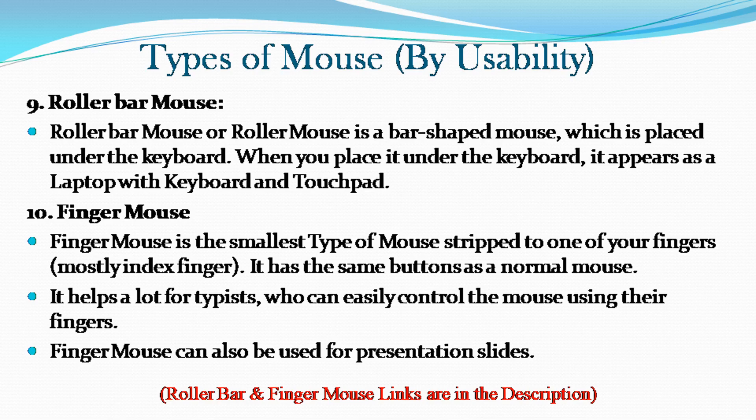Roller bar mouse, or roller mouse, is a bar-shaped mouse which is placed under the keyboard. When placed under the keyboard, it appears as a laptop with keyboard and touchpad. Finger mouse is the smallest type of mouse, strapped to one of your fingers. It has the same buttons as a normal mouse. It helps typists who can easily control the mouse using their fingers. Finger mouse can also be used for presentations.